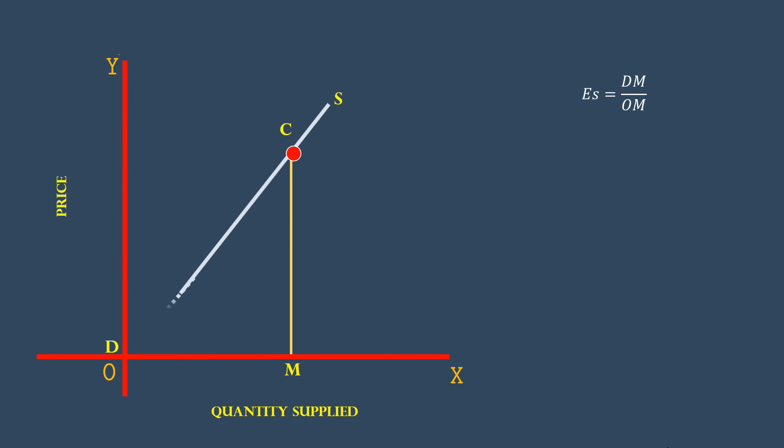This supply curve's lower segment, on being dragged down, touches the origin. So its DM is equal to OM. It means the elasticity is equal to 1. Supply is unitary elastic.